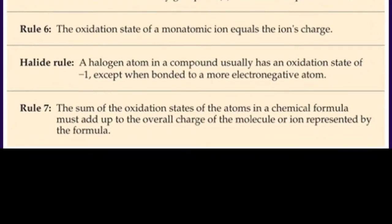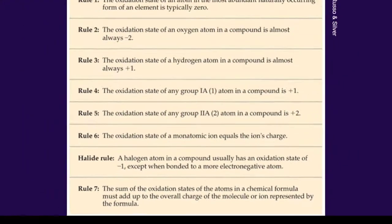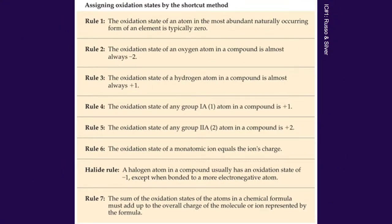The final rule is the one that's going to drive the rest of this video and the homework. When you add up the oxidation numbers of all the atoms in a compound, if the compound is neutral, the oxidation states have to add up to 0. If it's a polyatomic ion, then the oxidation states have to add up to the charge of the ion. Let's take a look at an example of that, and then you can get to the homework.